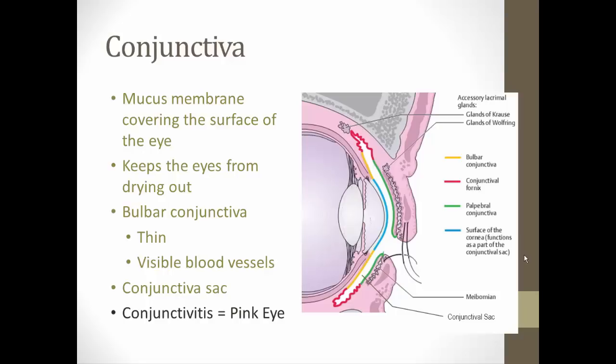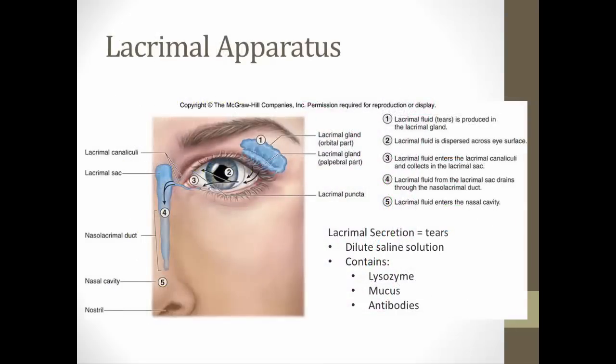Another accessory structure is the lacrimal apparatus, which is in charge of producing tears — the lacrimal secretions. Tears are a dilute saline solution containing lysozyme, an enzyme that attacks bacteria, as well as antibodies that attack bacteria, and mucus to keep the eye moist and keep fluids moving across the eye surface.